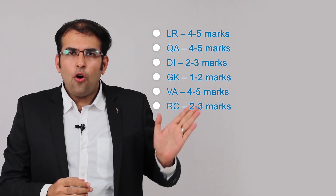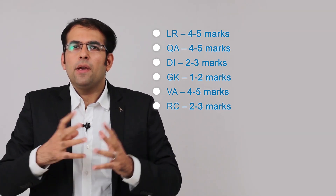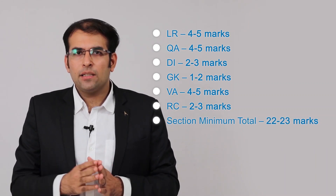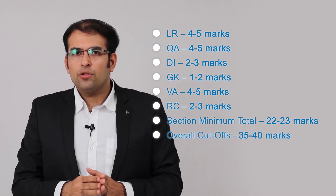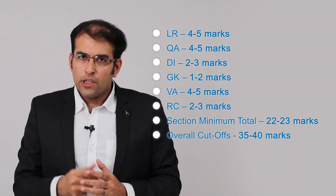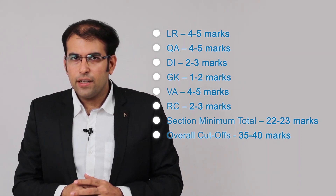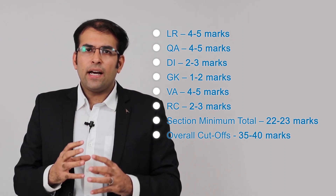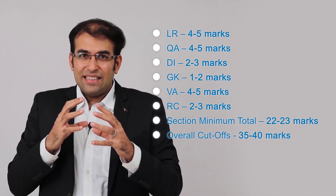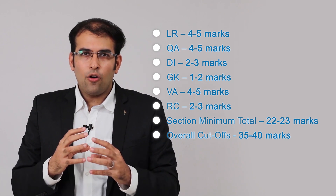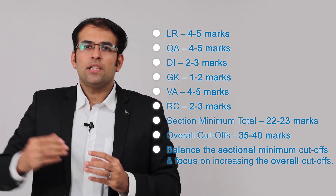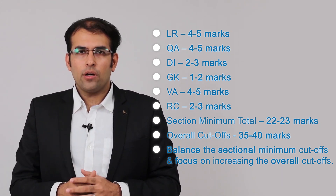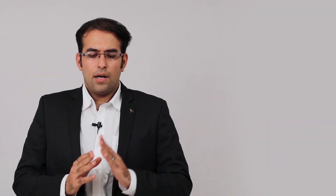The total of all sectional minimums may be around 23 marks, but the overall cutoff is not 23 — it could be 35–36, maybe 40 or even 45 marks depending on the level of difficulty. For IIFT, meeting the sectional minimum in all sections as well as crossing the overall cutoff threshold are both very important if you really want to get a call.